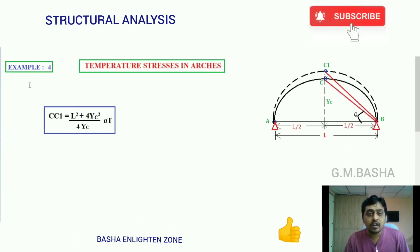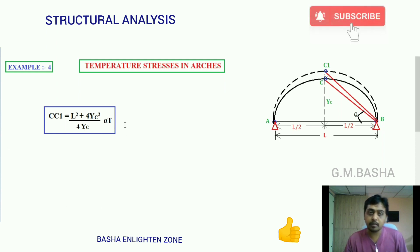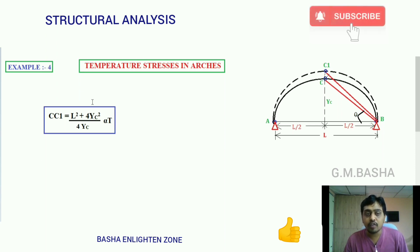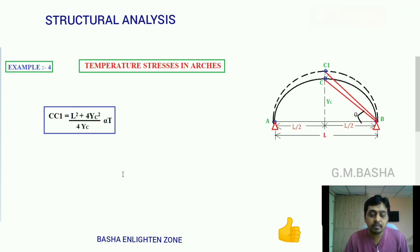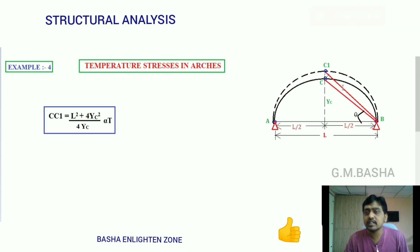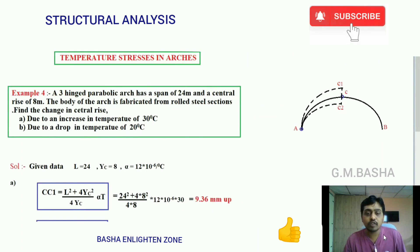The formula for CC1 and CC2 — due to changes in temperature for expansion and contraction — is just one formula; only the values change. Here, L is the length of the span, yc is the central rise, alpha is the coefficient of thermal expansion, and T is the change in temperature. For examination purposes you don't need to derive it — just remember the formula and substitute the values.